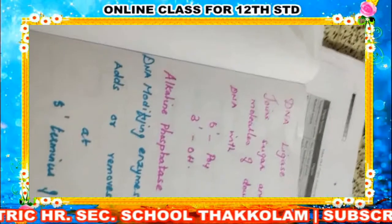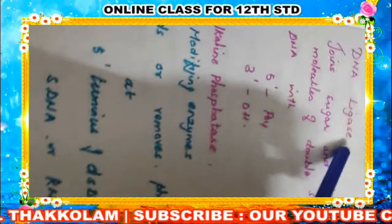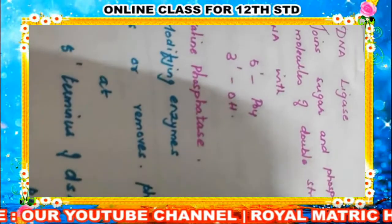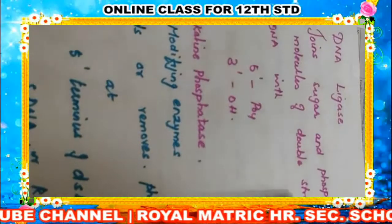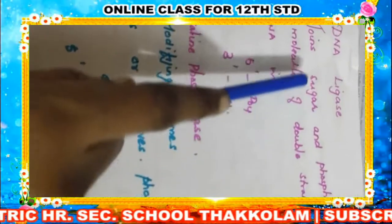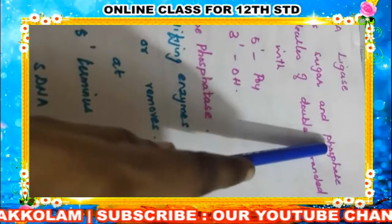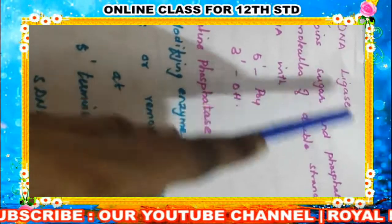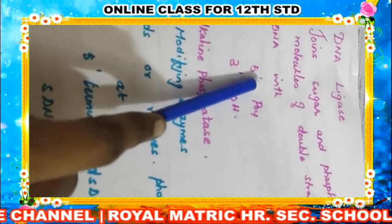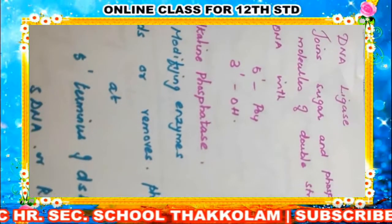The next tool, apart from the restriction endonuclease, is DNA ligase. The function of DNA ligase is it will join the sugar and the phosphate molecule of the double-stranded DNA with the 5'-phosphate and 3'-alcohol group. That is the main function of DNA ligase.